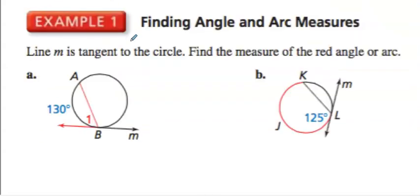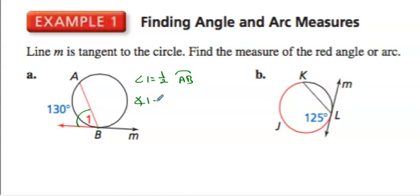Alright, so let's take a look at an example. Line M is tangent — touches here at one point. Find the measure of angle one. Angle one should equal one half of arc AB. The arc of AB is given as 130 degrees, so angle one is equal to 65 degrees.